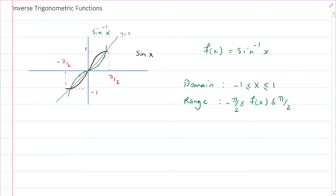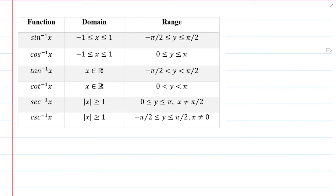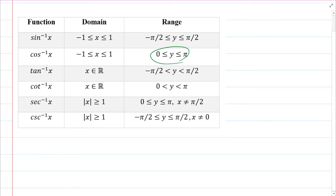Similar ideas can be used to find the domain and range of other inverse trigonometric functions. We restrict the domain of the original function, and from there we can define inverse trigonometric functions. This table shows other trigonometric functions and their inverses, as well as their domain and range. For example, for cosine inverse, the domain is again between negative one and one, and the range of cosine inverse is between zero and pi.